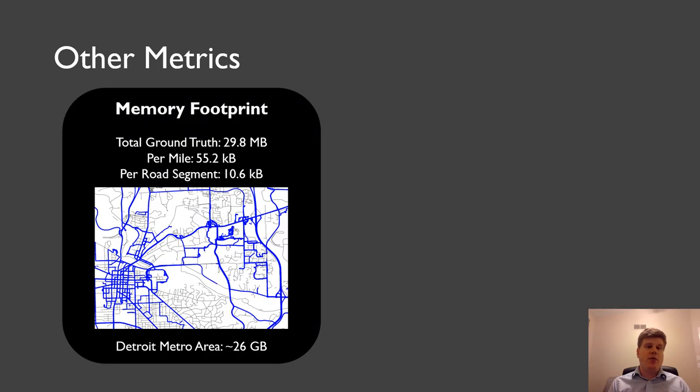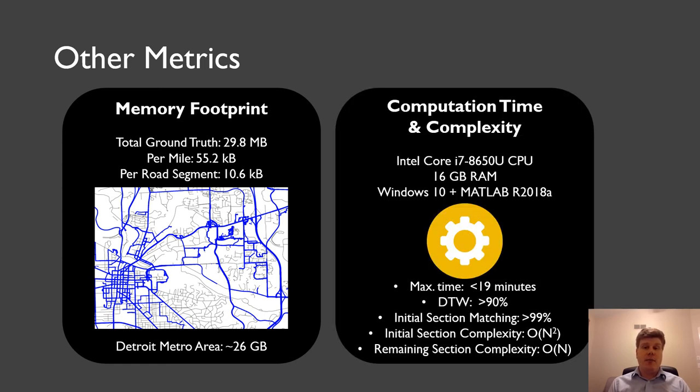Other metrics that we benchmarked are the memory footprint. So how big is it to store the entire ground truth road curvature database? For Ann Arbor, it was around 30 megabytes, which was 55 kilobytes per mile. And if we extrapolated for the Detroit metro area, which has more than 5 million inhabitants, it's around 26 gigabytes, which is not a lot for an attacker. And in terms of computation time, we conducted our experiments on a fairly low end setup. And we found out that the maximum time to process RAKUMA took less than 19 minutes. And so most of it was for running DTW, and initial section matching took more than 99% of the entire time.